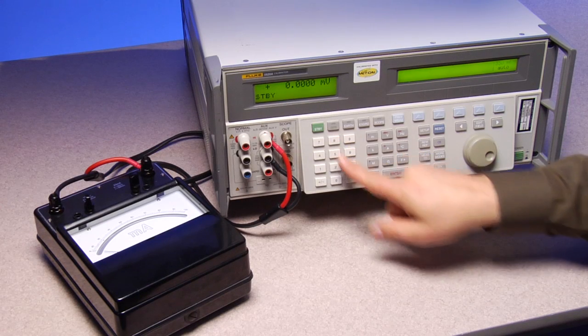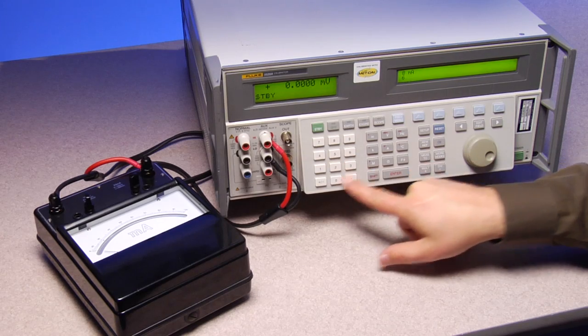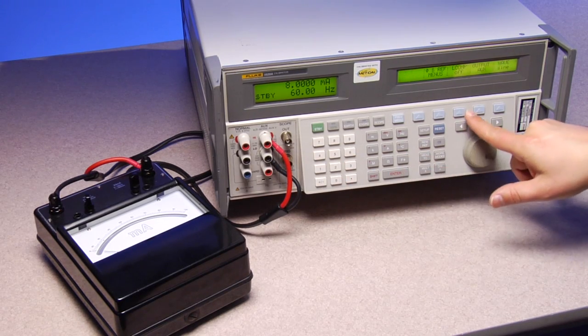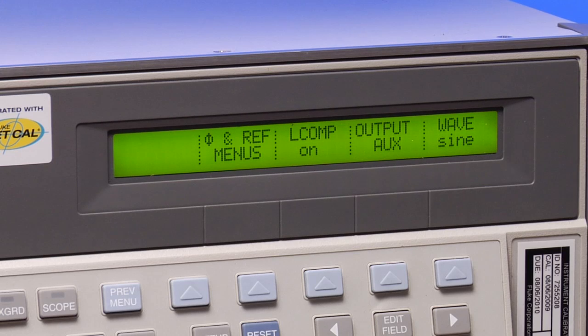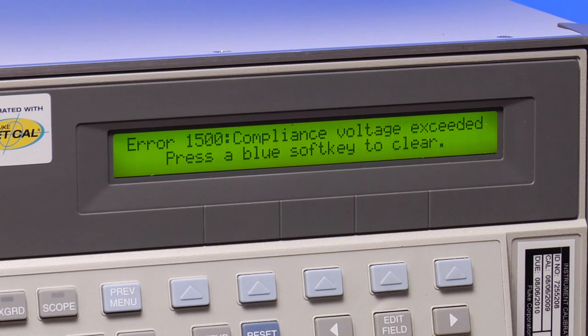The 5080A is a new type of calibrator with high compliance to calibrate low impedance analog meters. In the past if you used a calibrator like the 5520A to calibrate this type of analog meter it might trip and give you an error message, compliance exceeded.